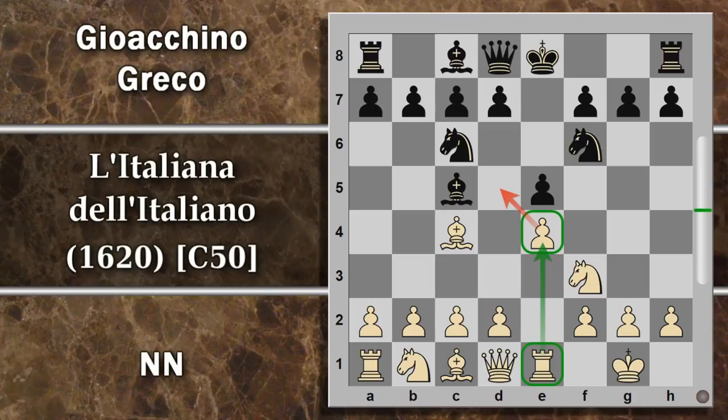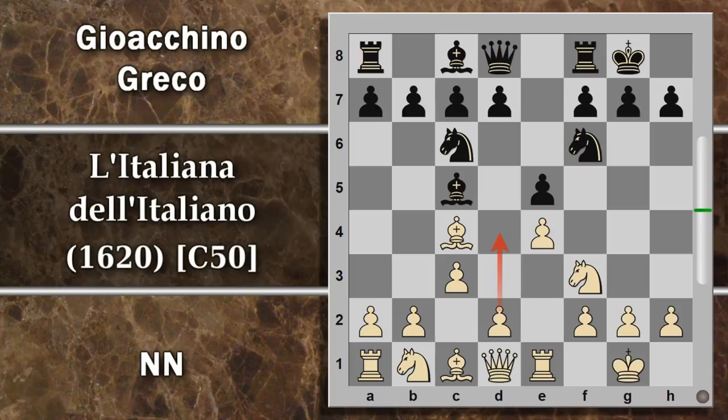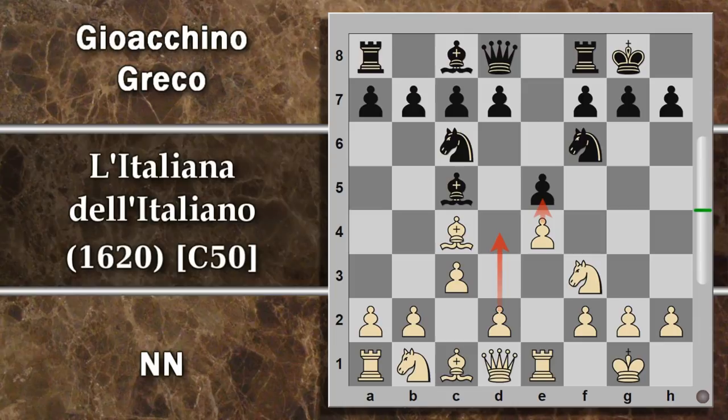Il Gioachino Greco non gioca questa, non era tra le armi delle sue aperture. Arrocca a sua volta, mettendo per prima cosa il re al sicuro. Dopodiché C3, con l'idea magari di spingere D4 e cercare di aprirsi la colonna per avanzare il pedone centrale. E qui viene giocata Donna E7. È ancora una partita nel libro delle aperture normali, però Donna E7 non lo è.